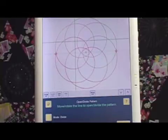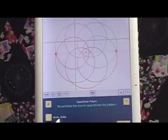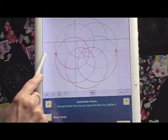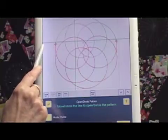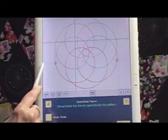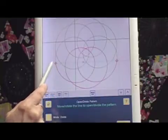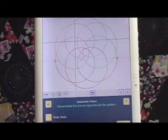So now I'm straight away on the Open Divide Pattern page and I want it set to Divide, Mode Divide. And I'm going to move my divide line until I see the targets at the widest point of the pattern, which I think looks like it's about there.